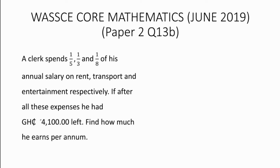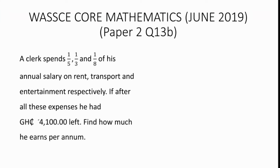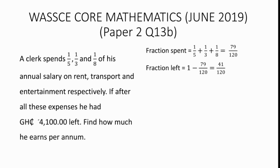A clerk spends one-fifth, one-third, and one-eighth of his annual salary on rent, transport, and entertainment respectively. If after all these expenses he had 4,100 Ghana cedis left, find how much he earns per annum. The fraction spent equals one-fifth plus one-third plus one-eighth, which gives 79 over 120. The fraction left equals 1 minus 79 over 120, which gives 41 over 120.